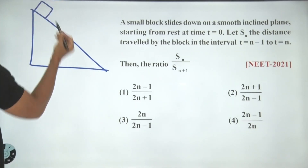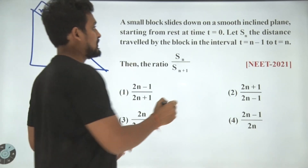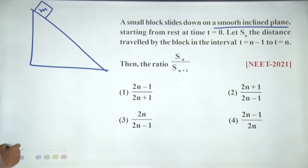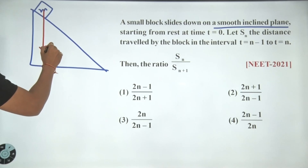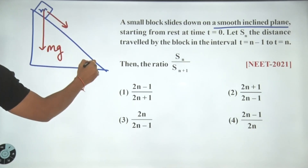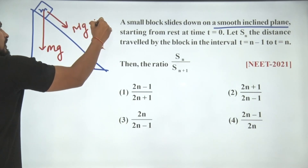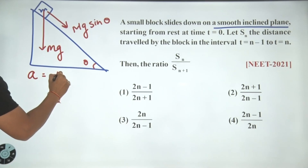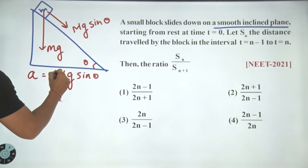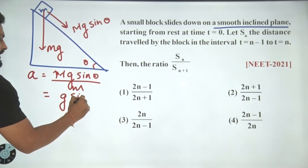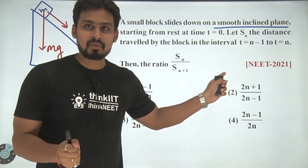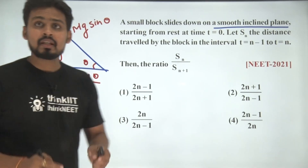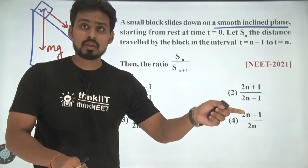We have a block of mass m on a smooth inclined plane. Since there is no friction, the only force acting is gravity in the vertically downward direction. The component along the incline is mg sinθ, responsible for moving the block downward. The acceleration equals net force upon mass which is g sinθ. Sn is the total distance traveled in n seconds minus the total distance in n−1 seconds.